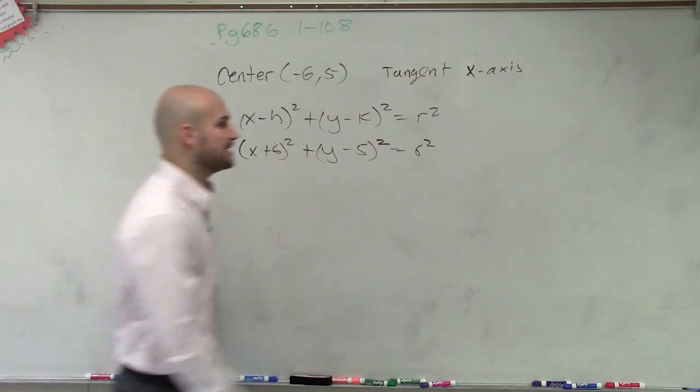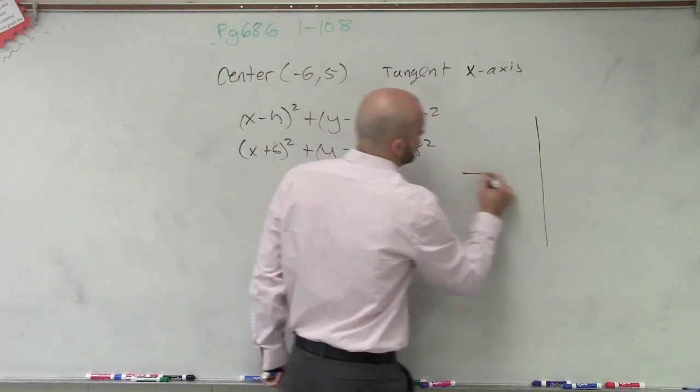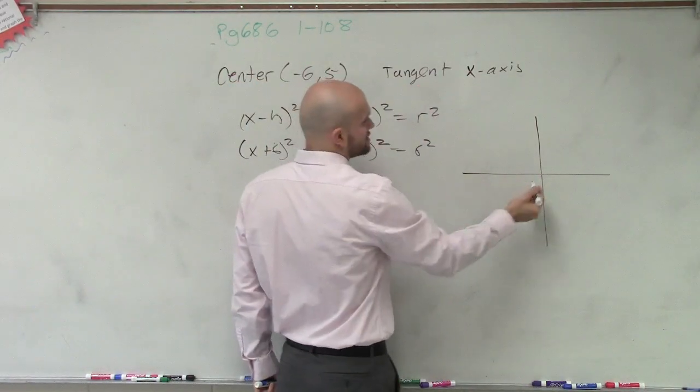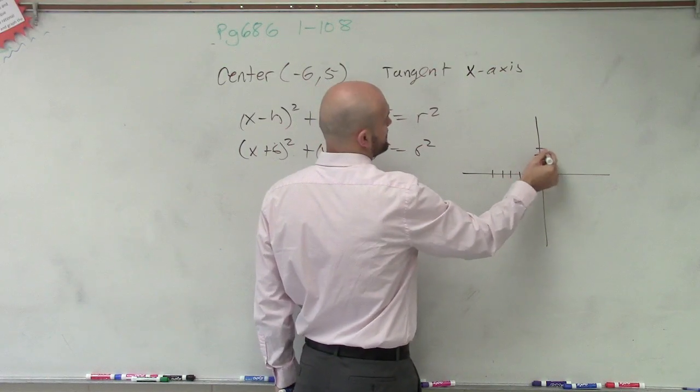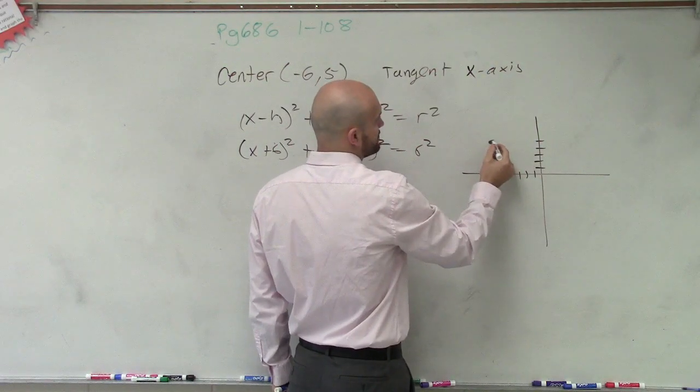But now we have our problem with r². What we need to do is determine where exactly our point is. Since it's over negative 6 - 1, 2, 3, 4, 5, 6 - and up 5 - 1, 2, 3, 4, 5 - that point's going to be right there.